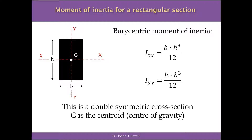If we have a cross-section that is a rectangle, as you can see on screen, we can easily locate the centroid G in the middle of the section, and define a pair of axes X and Y. These axes are called barycentric axes because they pass through the centroid, or barycenter, of the cross-section.